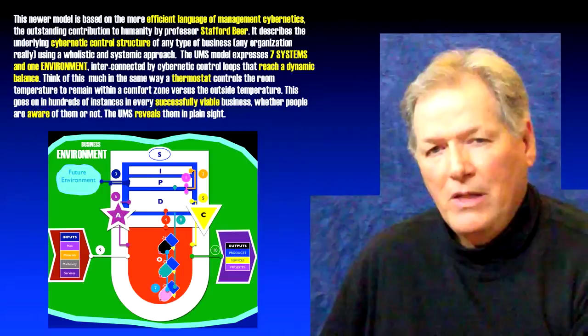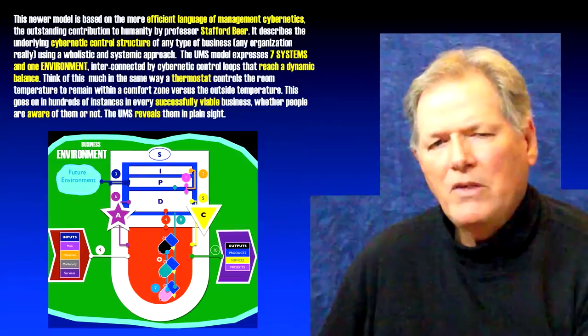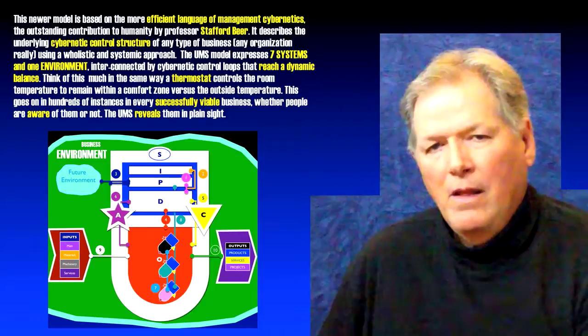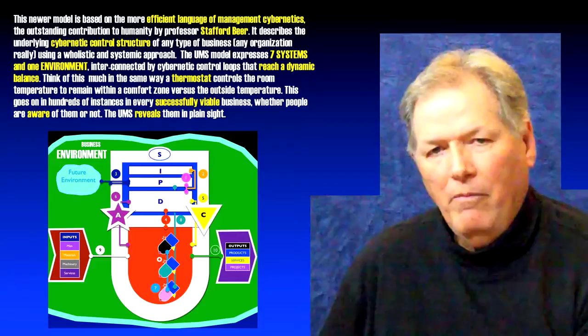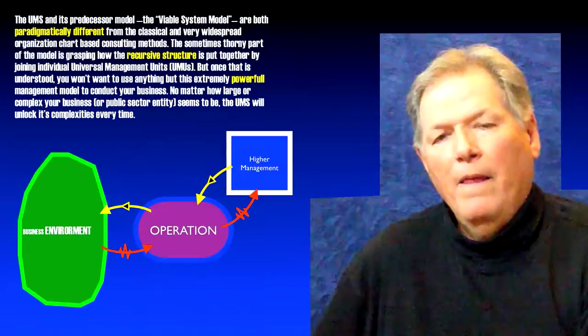The UMS model expresses seven systems in one environment interconnected by cybernetic control loops that reach a dynamic balance. Think of this much in the same way as a thermostat controls the room temperature to remain within a comfort zone versus the outside temperature. This goes on in hundreds of instances in every successful viable business, whether people are aware of them or not. The UMS reveals them in plain sight.